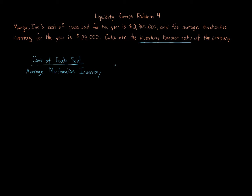Here the numbers are given to us. Cost of goods sold is $2,900,000, and that goes over the average merchandise inventory, which we're told is $133,000. Taking $2,900,000 divided by $133,000, we get 21.80 — so the inventory turnover ratio is 21.8 times.